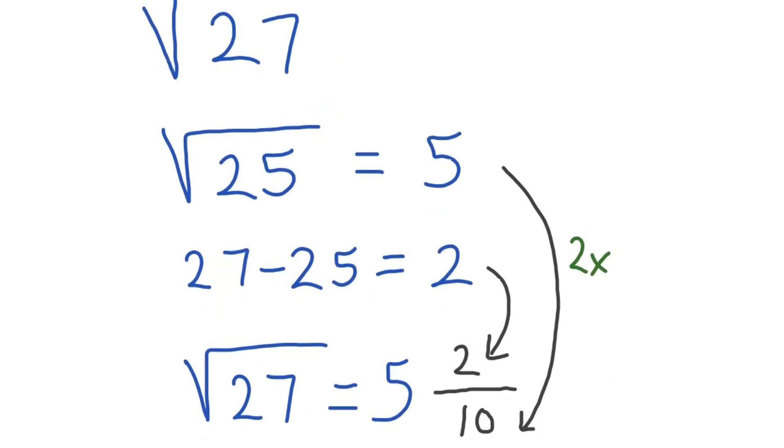So square root 27 equals our whole number value, which is just square root 25 is 5, and then we're going to have a fraction right next to it. The numerator is just going to be the difference that we got before, 27 minus 25, and then the denominator is just the whole number value multiplied by 2.